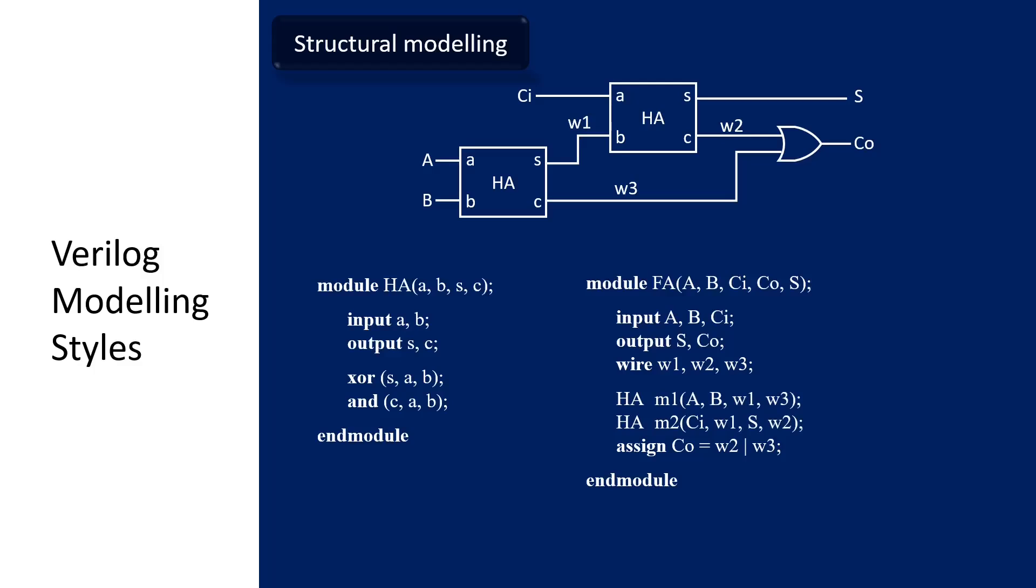We can have another style of port connection syntax which we call the positional port connection syntax. In this style of syntax, the port list of the instantiated module is arranged based on the position of the port in the sub module. In this case, capital A, which is the port of the top module, is now connected to the small a, which is the port of the sub module. Capital B is connected to small b, W1 is connected to S, and W3 is connected to C.